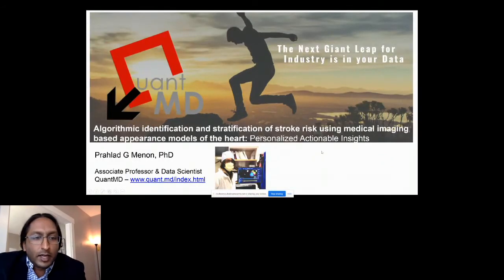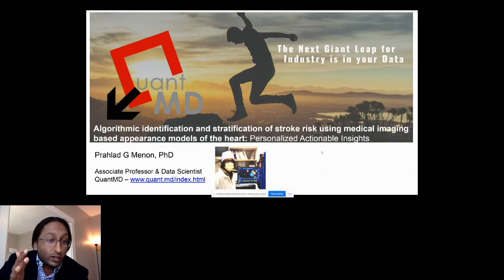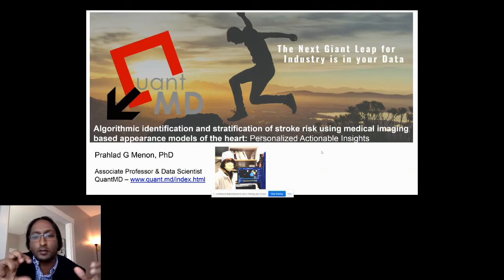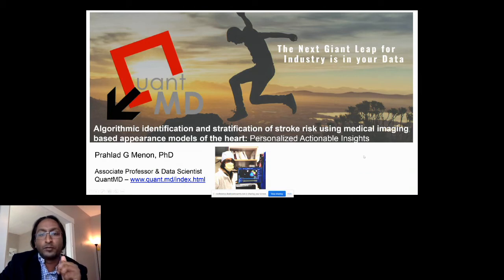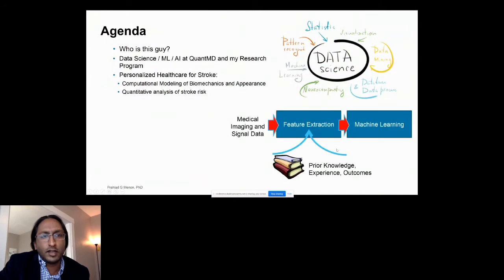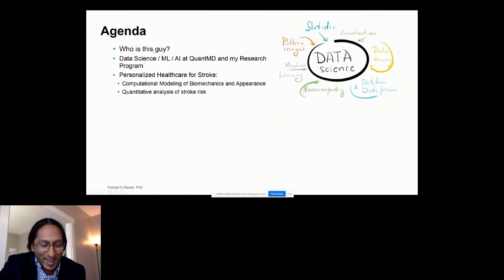So the title of my talk is Algorithmic Identification and Stratification of Stroke Risk Using Medical Images. I have a few different approaches in my research program where medical images are quantified. One is using statistics-based appearance models and quantification of shape and structure and measurements, and then the other is using function and flow, which sometimes involves the use of physics-based simulations as well.